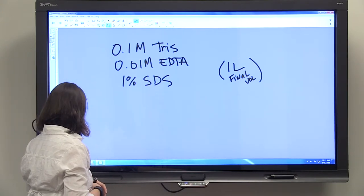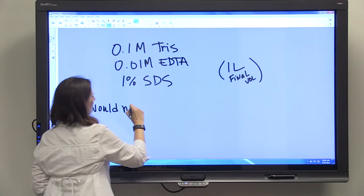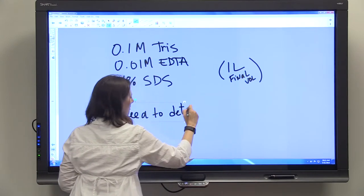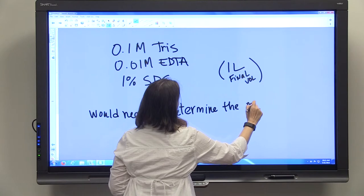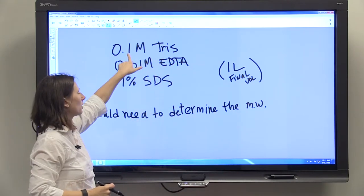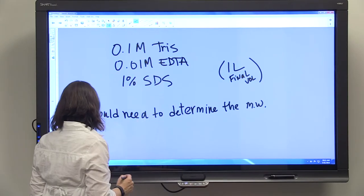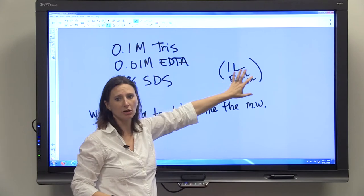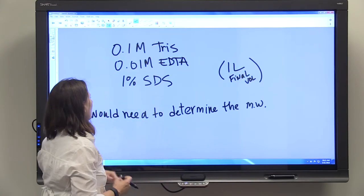For this solution, you'd need to determine the molecular weight of Tris so that you know how to make a 0.1 molar final volume of Tris. You'd have to do the same for EDTA so that you could make the final liter of solution that you have be 0.01 molar EDTA.